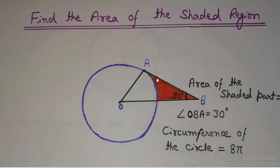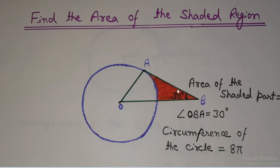First of all, to calculate the area of this shaded region in red color, we need to know how we are going to calculate it. We need to calculate the area of triangle OAB, and after getting the area of this triangle, we will subtract the area of this sector — this part of this circle — and we will get the area of this shaded region.